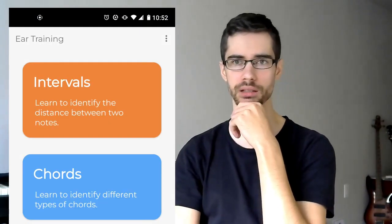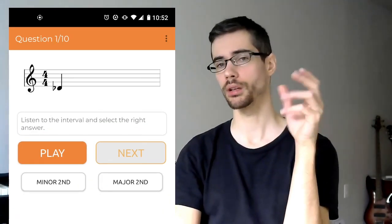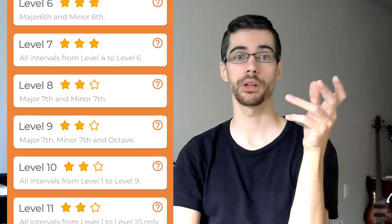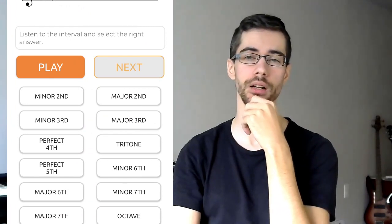Most apps will start you off by learning to distinguish between similar basic intervals, such as major second, minor second. And then you gradually build your collection of intervals that you can identify until you're able to identify a random interval somewhere between a half step and an octave.